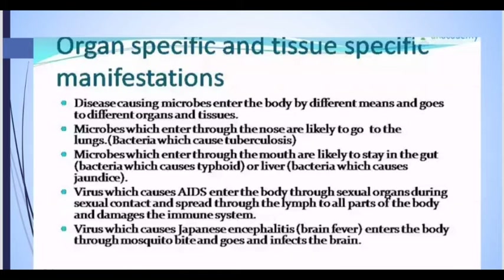Viruses which cause AIDS enter the body through the sexual organ during sexual contact and spread through the blood to all parts of the body, damaging the immune system. The virus which causes Japanese encephalitis, that is brain fever, enters the body through a mosquito bite and goes to infect the brain.